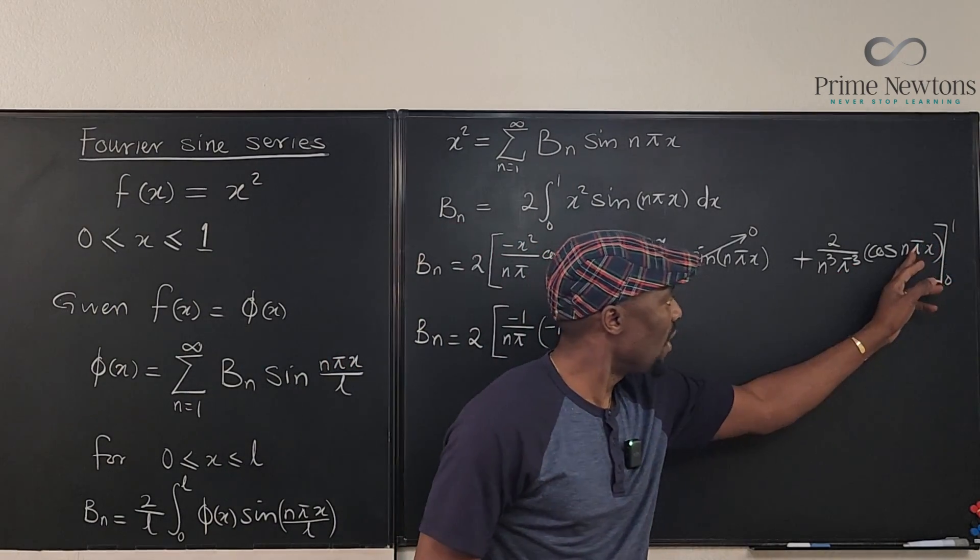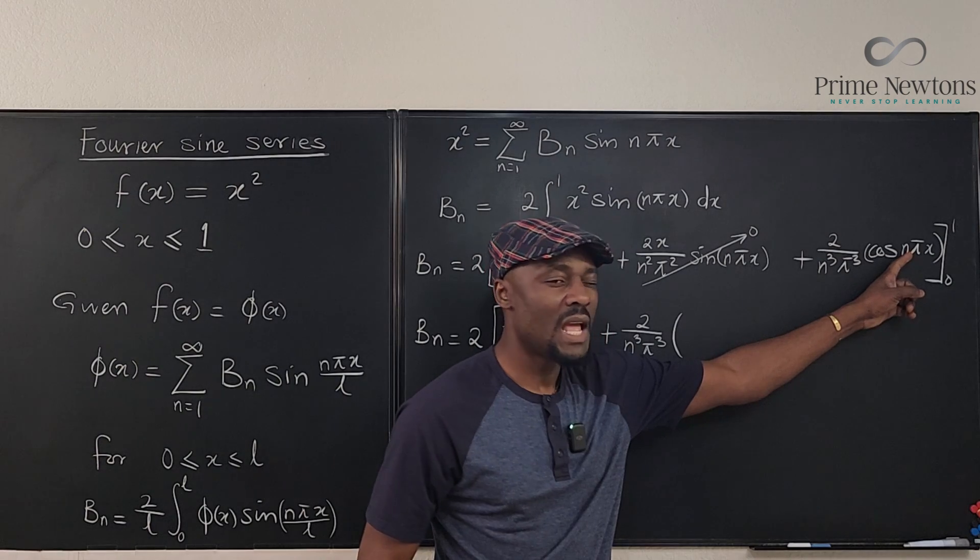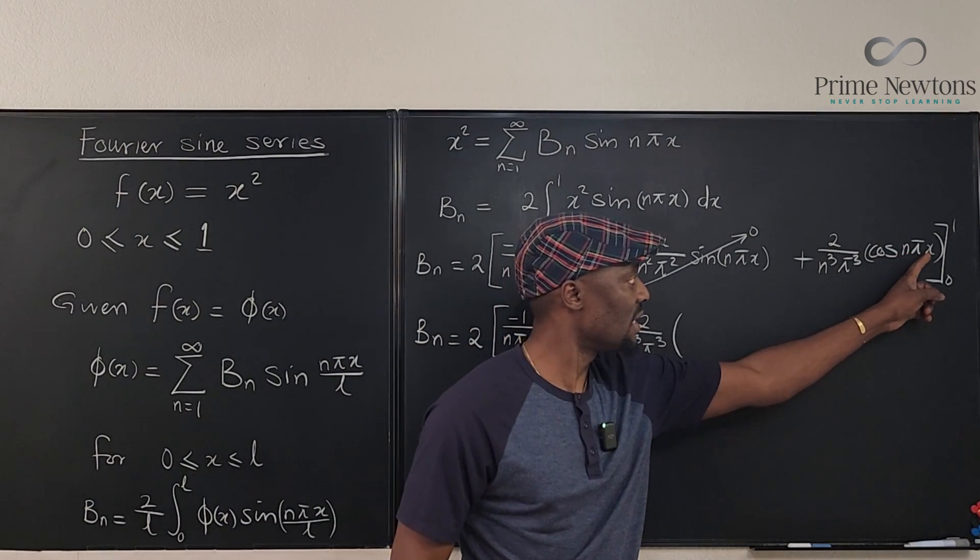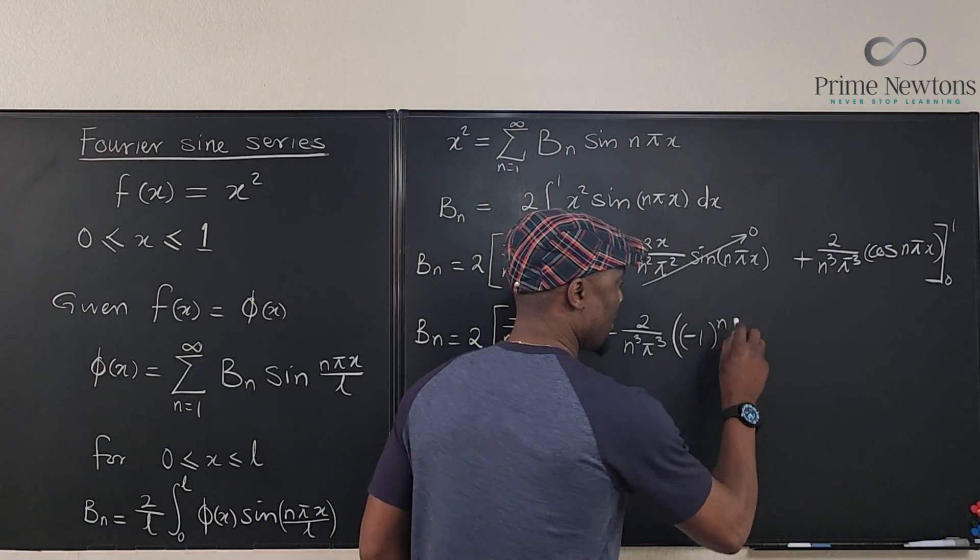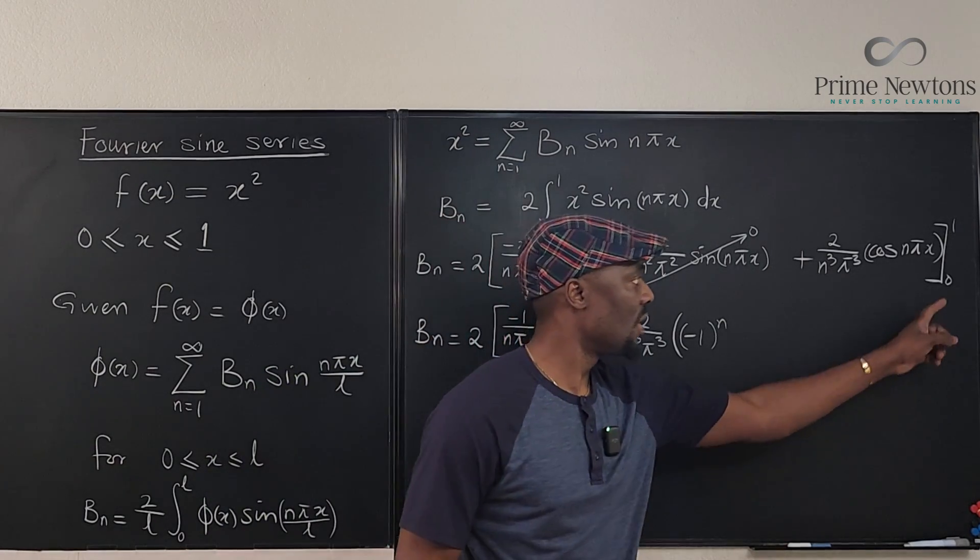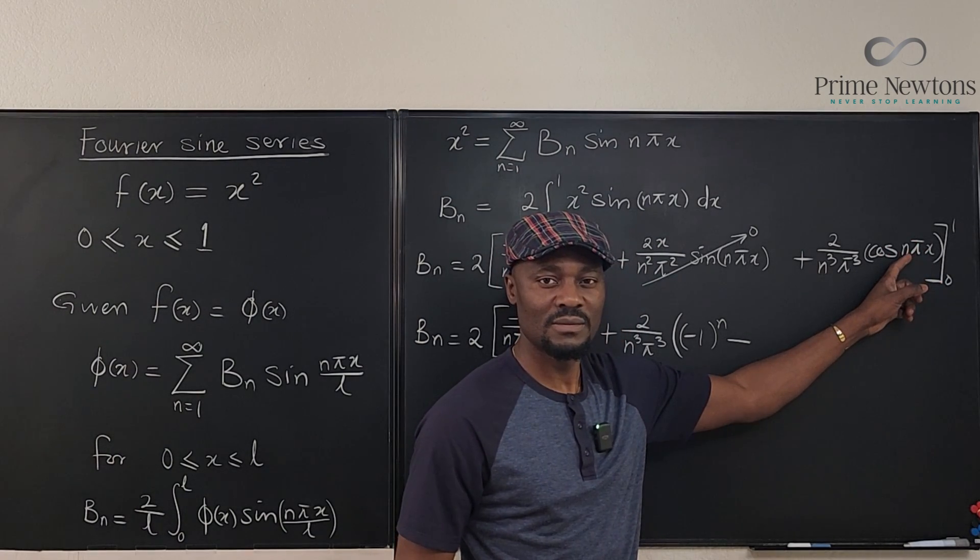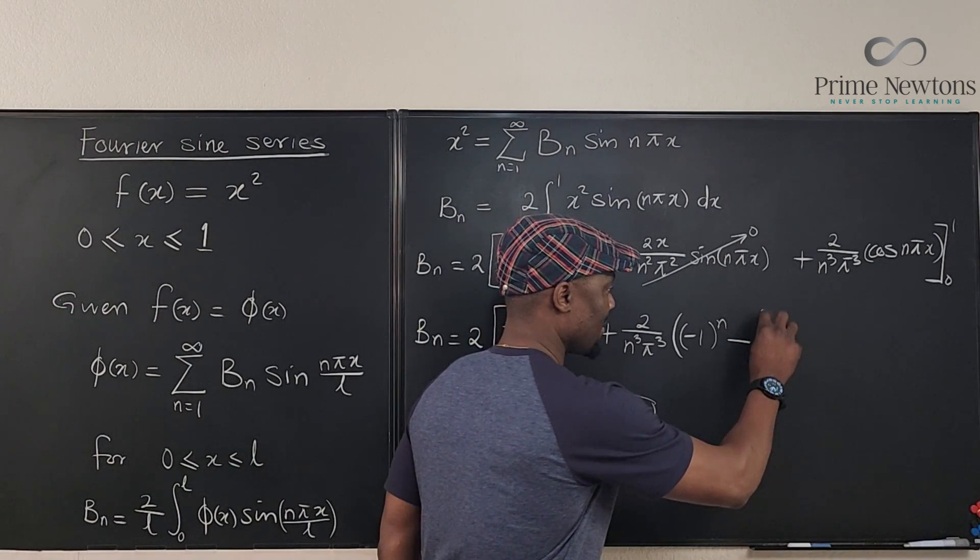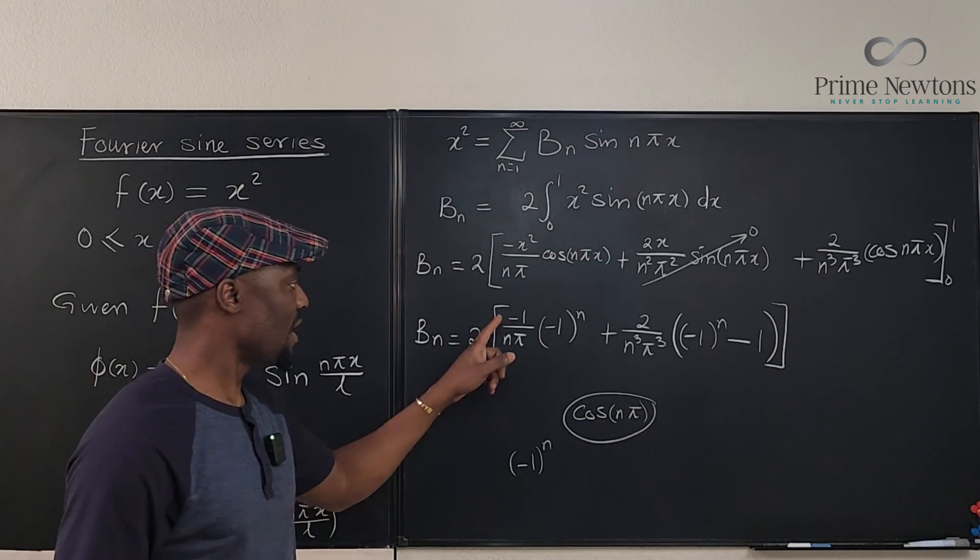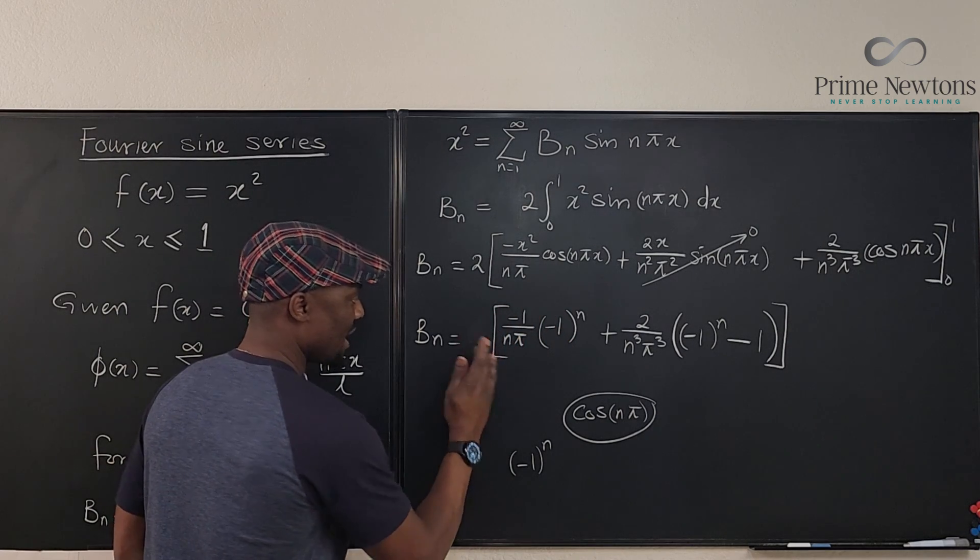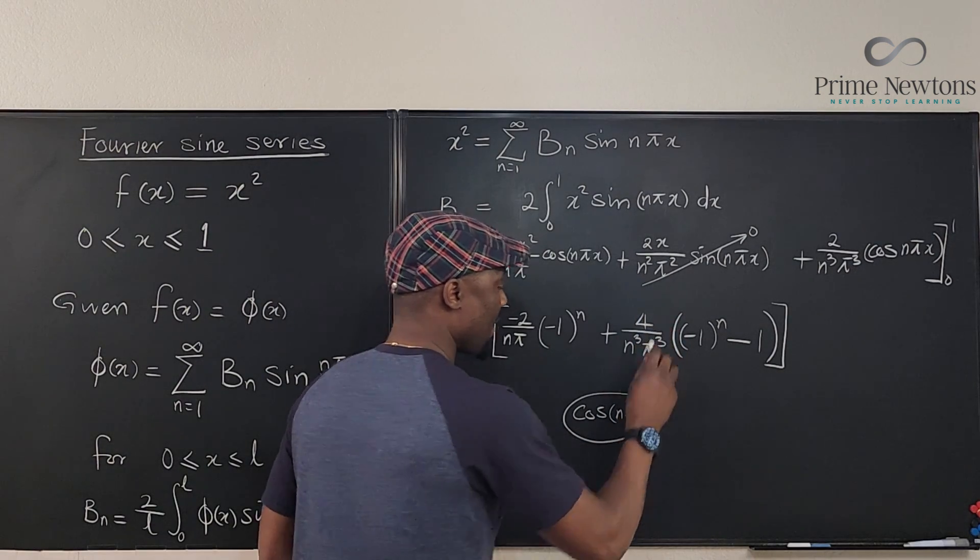Now when you plug in 1 here, if you plug in 1, you're going to get just cosine n pi, which is the same thing as negative 1 to the n. And then when we plug in zero, we're supposed to subtract. Plug in zero here, you're going to have cosine zero, which is 1. Now if you don't want this 2 to be outside, you can put the 2 inside. I can remove this 2 from the outside and use it to multiply each of these. So this is negative 2 and change this to 4. And that's your b sub n.